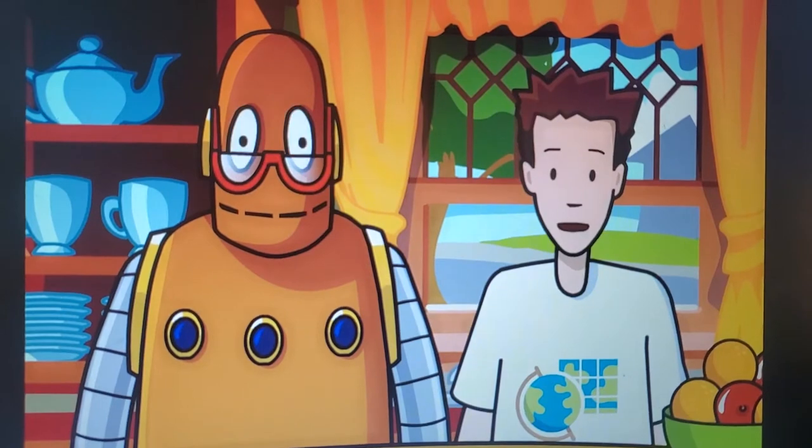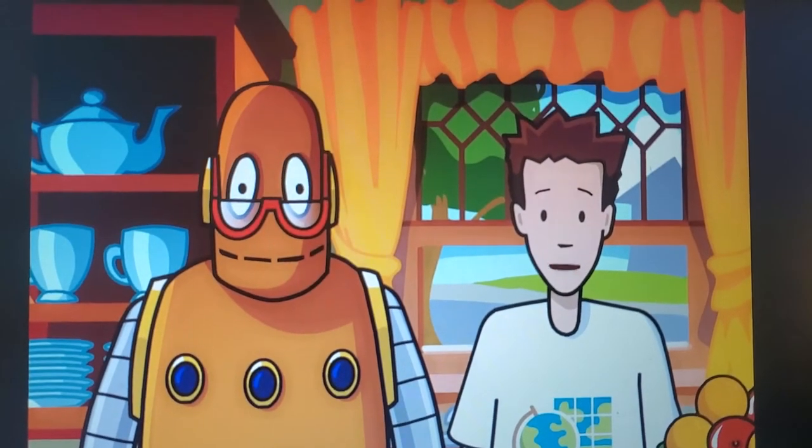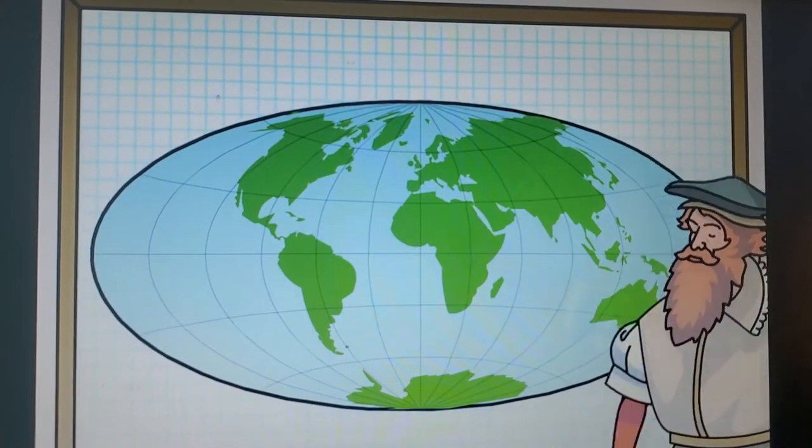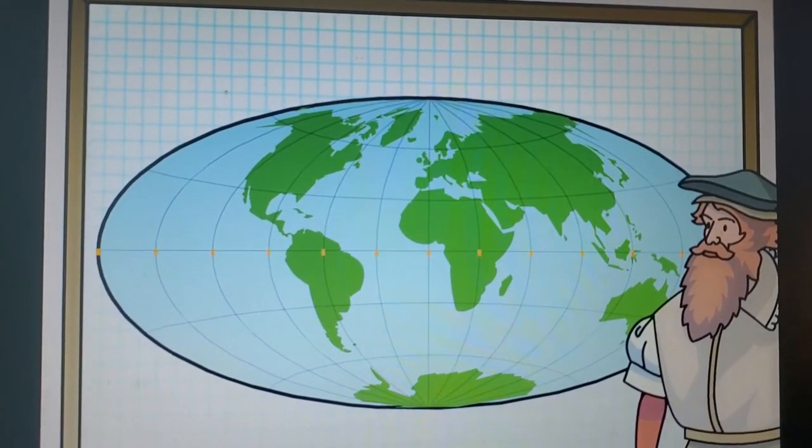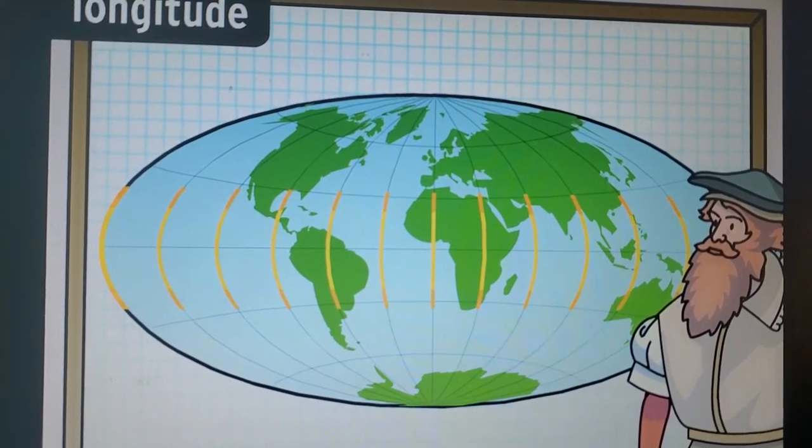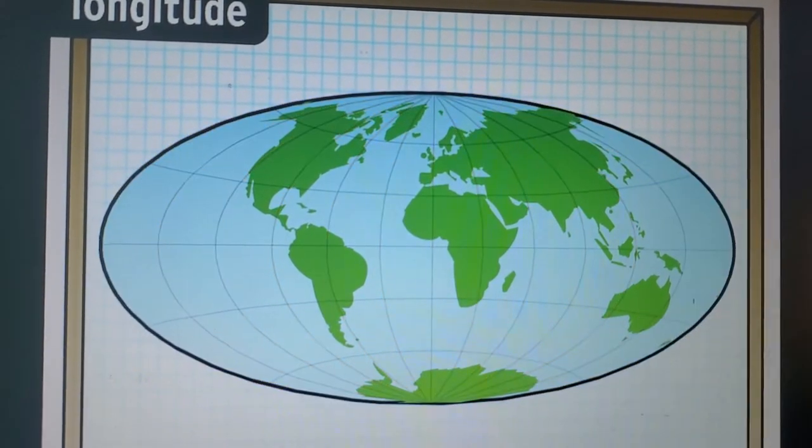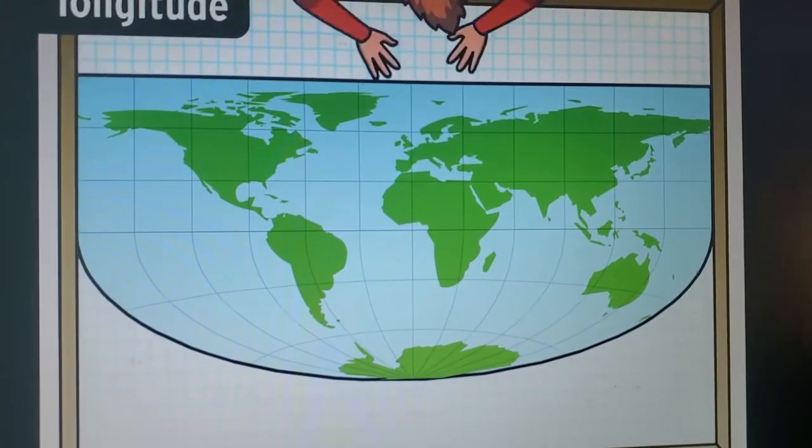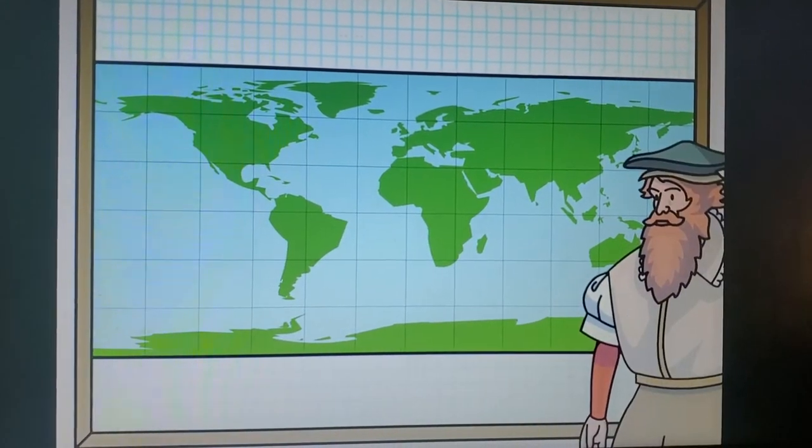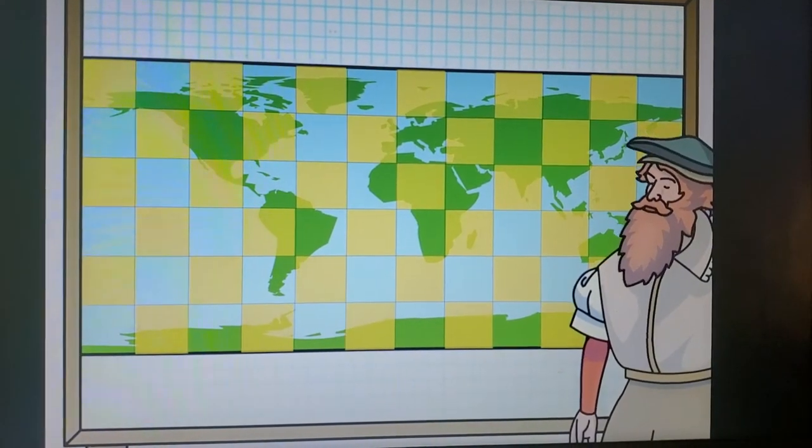Well, Mercator had to mess with certain elements on the globe to make his map work. He distorted its shape to fill a rectangular space. On a globe, the lines of longitude meet at the poles. Mercator straightened these out, making the lines parallel, which meant he had to stretch out any features between them too. The result was a map covered in a grid of squares.